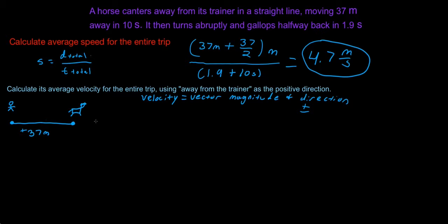We did 37 meters in the positive direction. We turned around and did half of that in the negative direction. So our horse is going back halfway, which is 37 over 2. But since it's in the opposite direction, we need to put a negative here.